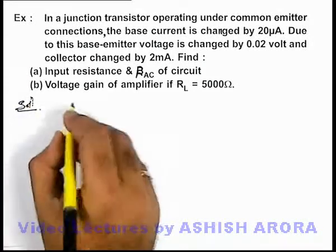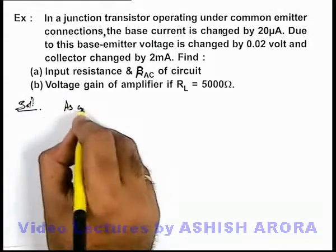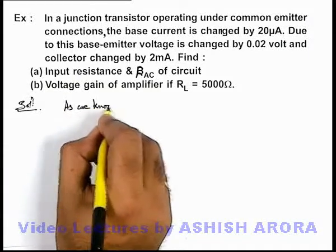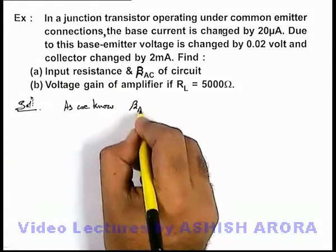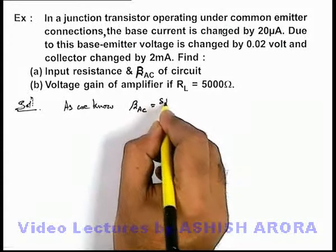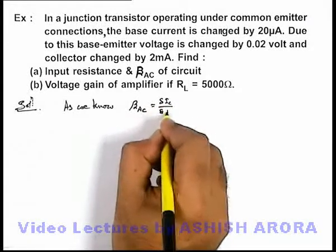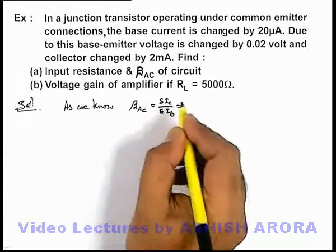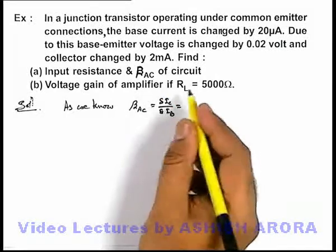Here we can directly write that, as we know, the value of beta AC is given by delta I_C over delta I_B. If we substitute the values, we'll directly get the value of beta AC.